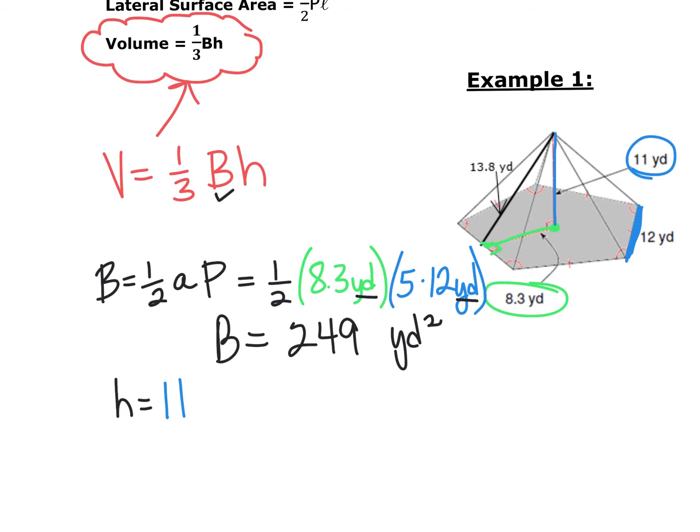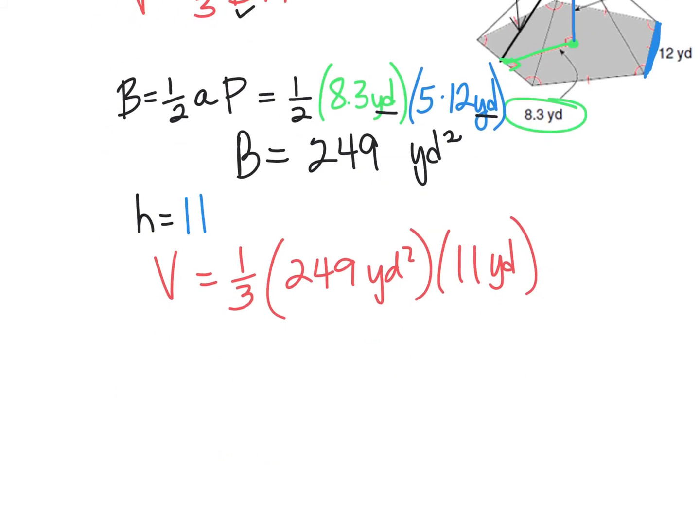So let's just plug everything into the volume formula. We have one-third times 249 yards squared times 11 yards. And that equals 913 cubic yards.